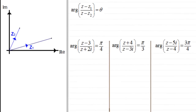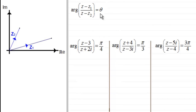Hi, welcome to another video in my series on the locus of a complex number z. In this video we're going to look at this equation: the arg of z minus z1, all divided by z minus z2, equals theta.